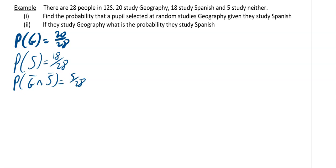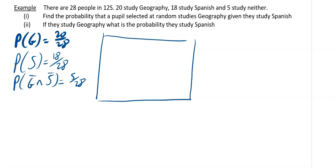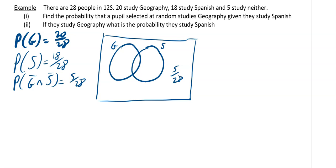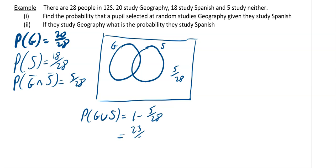We can use a Venn diagram. With geography and Spanish circles drawn, the 5/28 sits outside both circles. This tells us that P(G union S) equals 1 minus 5/28, which works out to 23/28.